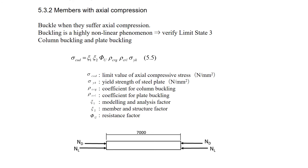Section 5.3.2: Members with Axial Compression. Steel members may buckle when they suffer axial compression. Buckling is a highly nonlinear phenomenon associated with out-of-plane deformation. Therefore, Limit State 3 is verified by equation 5.5. There are two kinds of buckling: column buckling and plate buckling, whose effects are included in this equation. When Limit State 3 is satisfied, it is regarded that Limit State 1 is automatically satisfied.